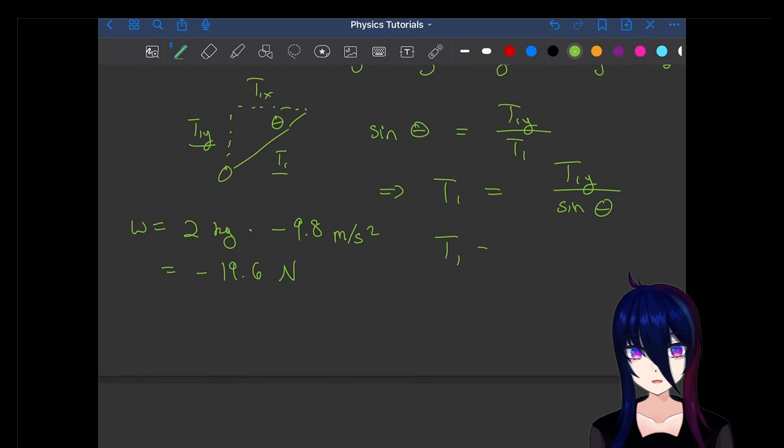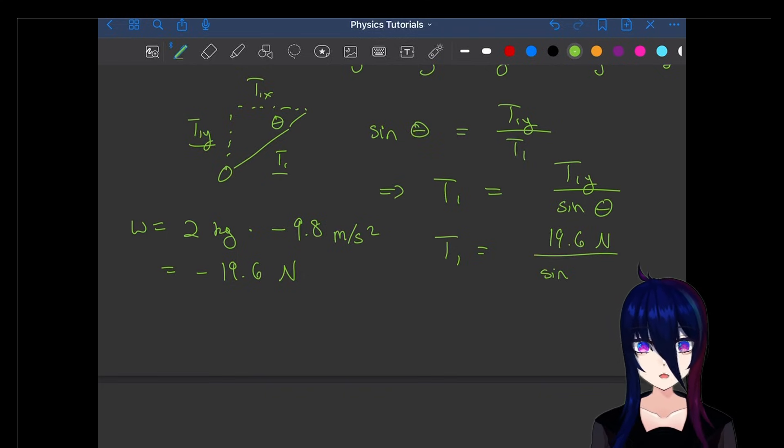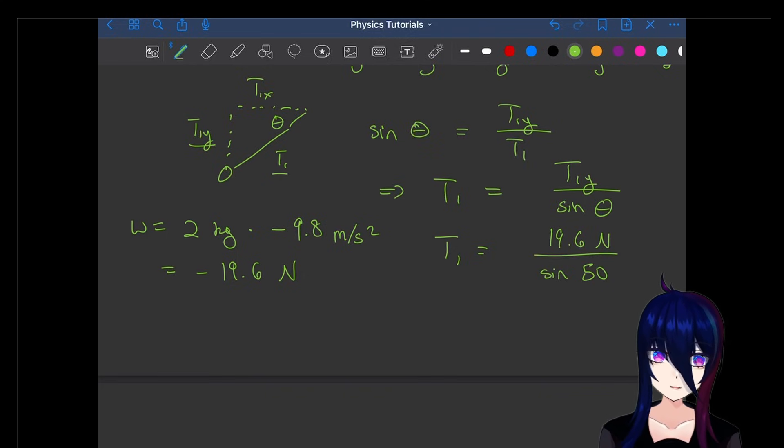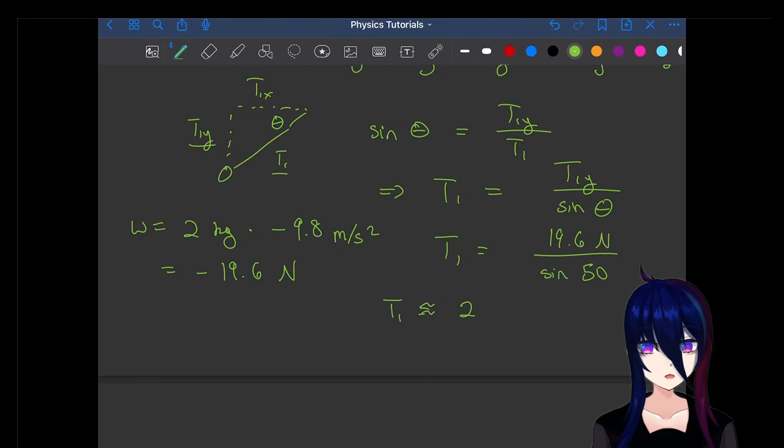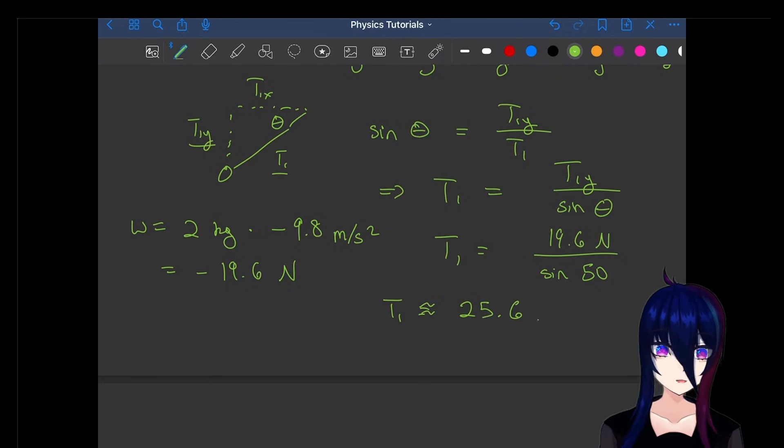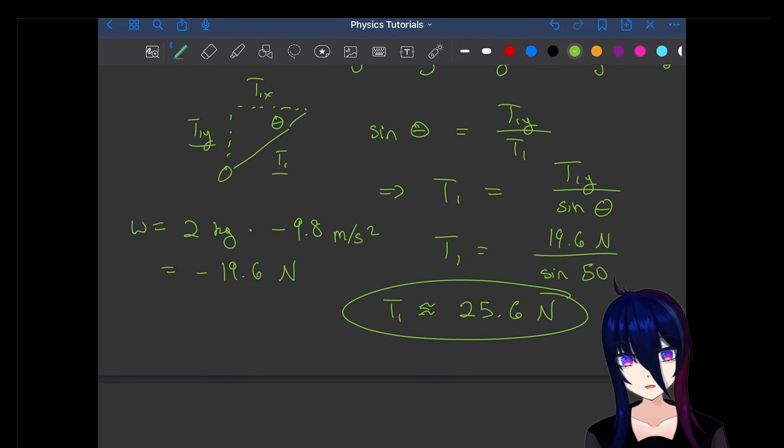Plug that in because we know that T1Y is equal to the negative weight. That gives us 19.6 Newtons divided by the sine of 50 degrees. So therefore, T1 is approximately 25.6 Newtons. And that's how you find the tension of a system like that.